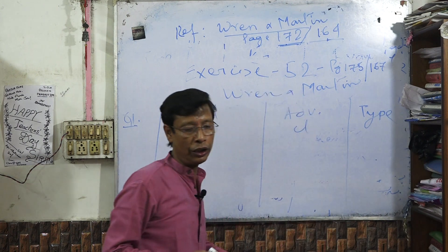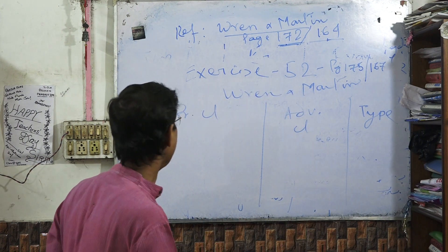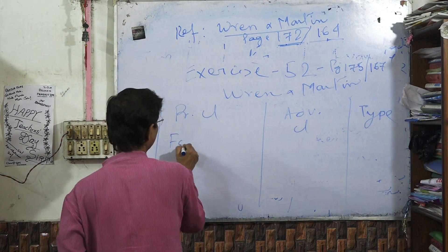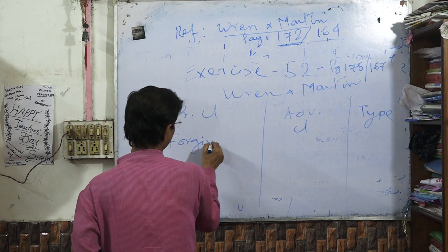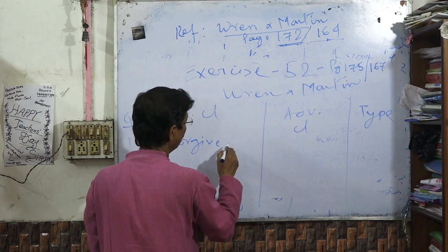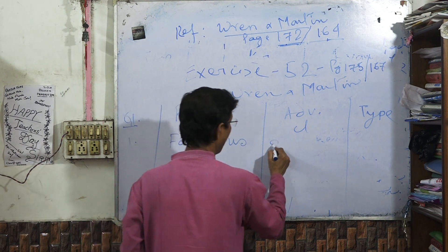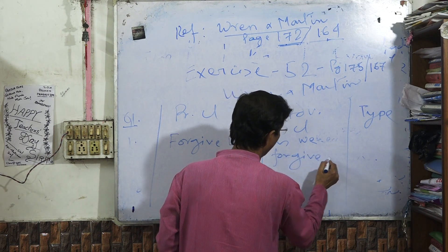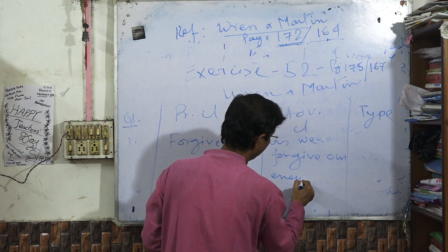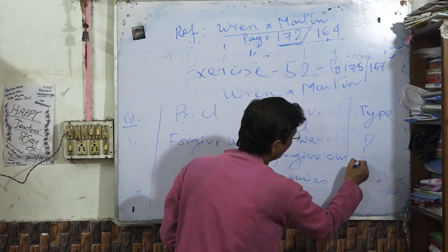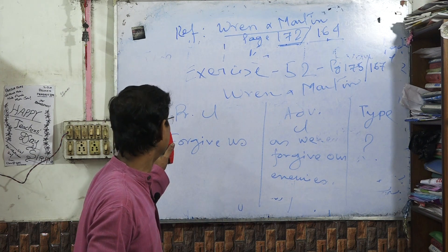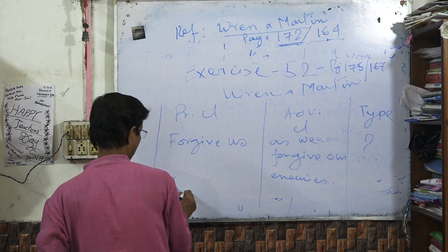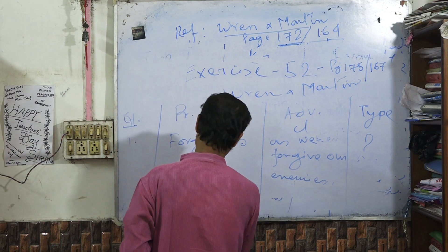Let me show an example. Question 1: 'Forgive us as we forgive our enemies.' Here, 'forgive us' is the principal clause, and 'as we forgive our enemies' is the adverbial clause. This is the principal clause. Solve the first 20 questions.